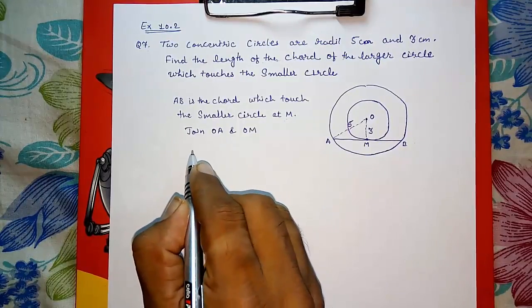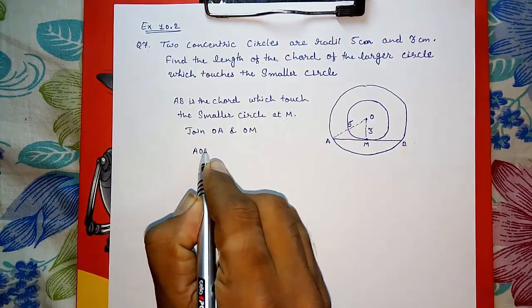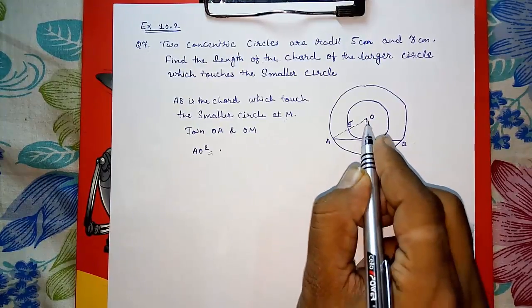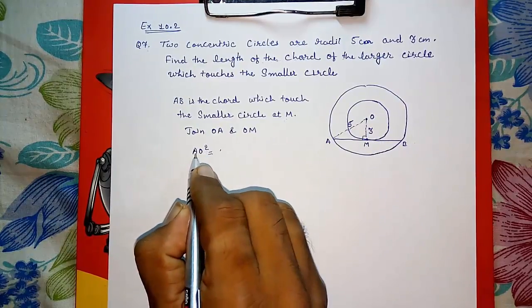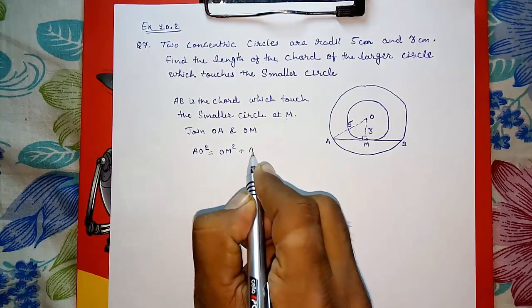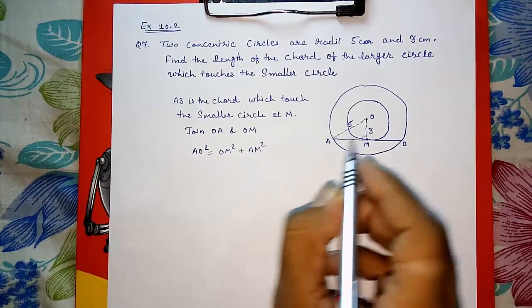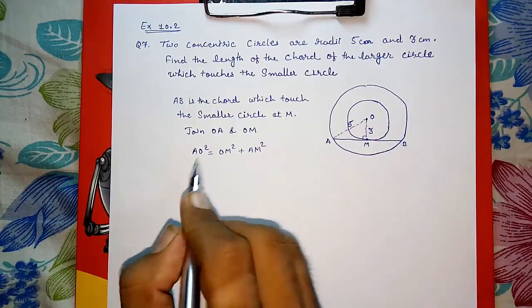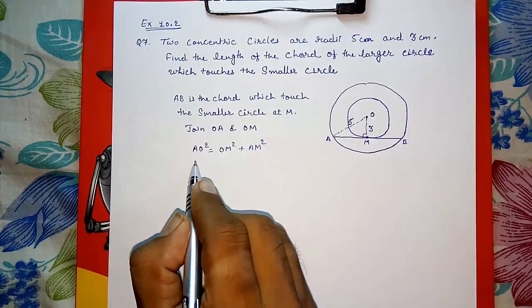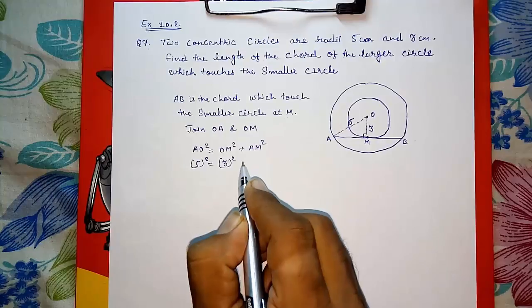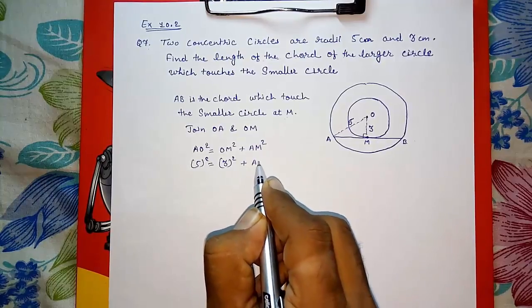We know that AO² will be equal to - why? We know this is perpendicular, tangents are perpendicular. AO² is equal to OM² plus AM². If you want to write, you can write that OM is perpendicular, so it is a right angle triangle. Now directly, 5² is equal to 3² plus AM².